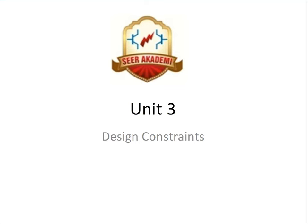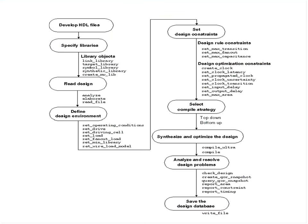Hello everyone. We have been following this particular flow for understanding the Design Compiler flow. In the last lecture we saw how to define the design environment; before that we saw how to write the RTL and read RTL in Design Compiler, assuming the libraries are all in place. Last lecture focused on setting the design environment, which includes setting operating conditions, input loading conditions, output loading conditions, and so on. Now that our operating and environment conditions are defined,